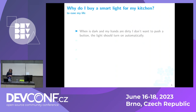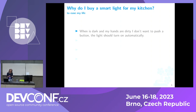My first question is: why do I buy a switch to put in my kitchen? One reason is when I cook my hands are dirty, outside it's dark, and I don't want to switch on the button. My system should be smart enough to turn on the light automatically.